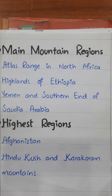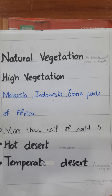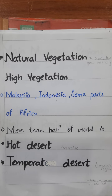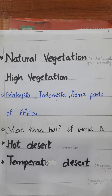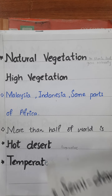Much of the Muslim world is not very fertile, or we can say it has very little natural vegetation. Natural vegetation means the plants that grow naturally. Much of the Muslim world has very little natural vegetation, except Malaysia, Indonesia, and some parts of Africa. More than half of the Muslim world is hot desert, temperate desert, semi-desert, and scrub.